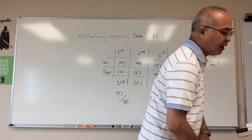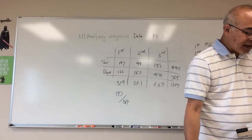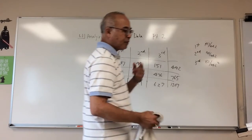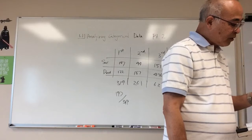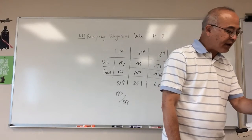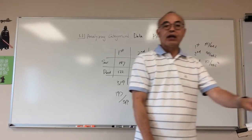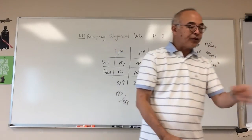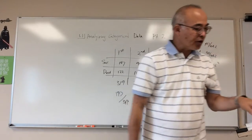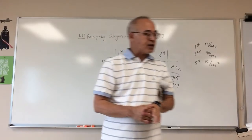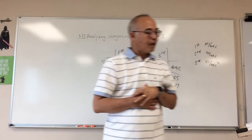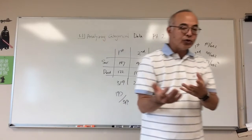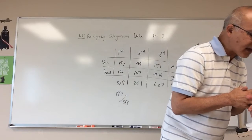If you add the three bars on the left-hand side of the side-by-side bar graph — the blue, red, and green — they add to 100%. The same is true for the right-hand group. On the segmented bar graph, those bars are stacked one on top of each other, and they both add to 100%.